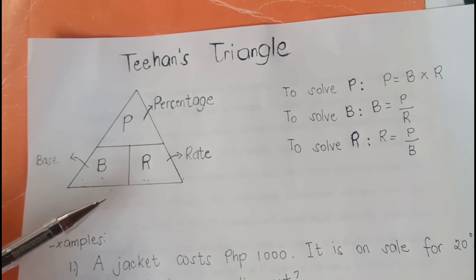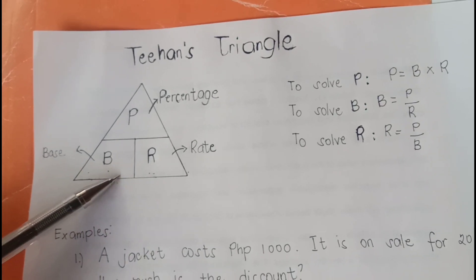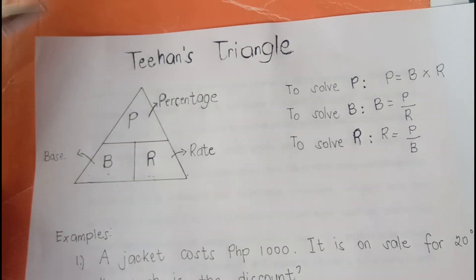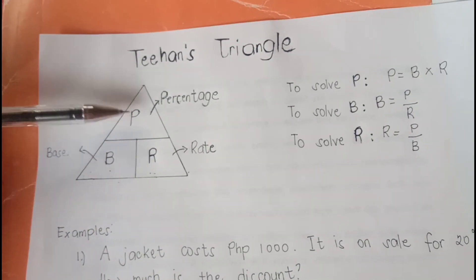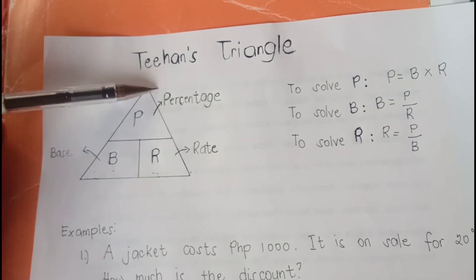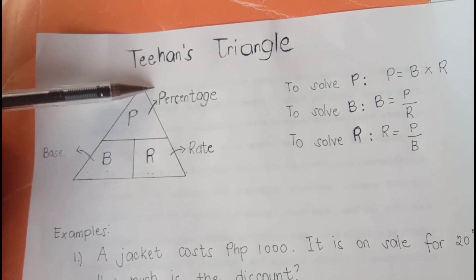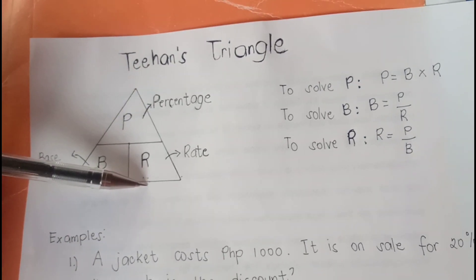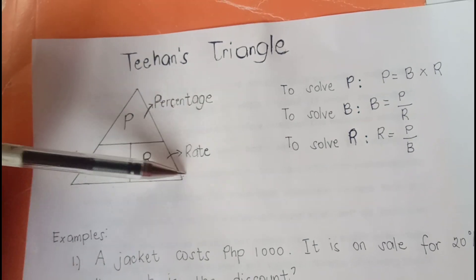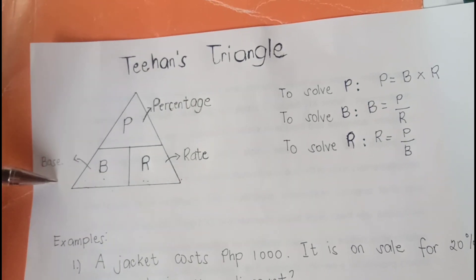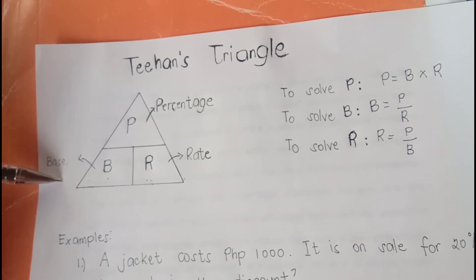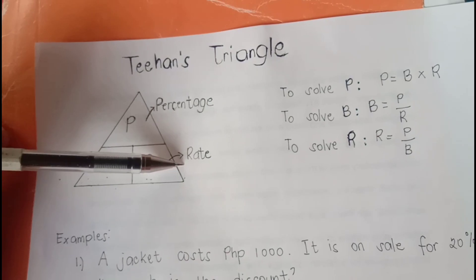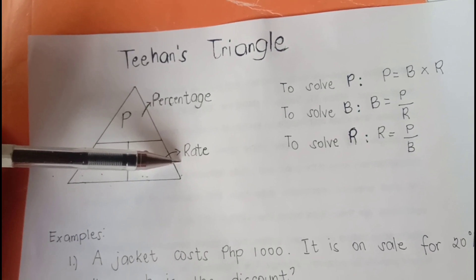As you can see here, we have a triangle. P is for the percentage, B is for the base, and R is for the rate. When we say base, that is the original price, and the rate is the discount rate.